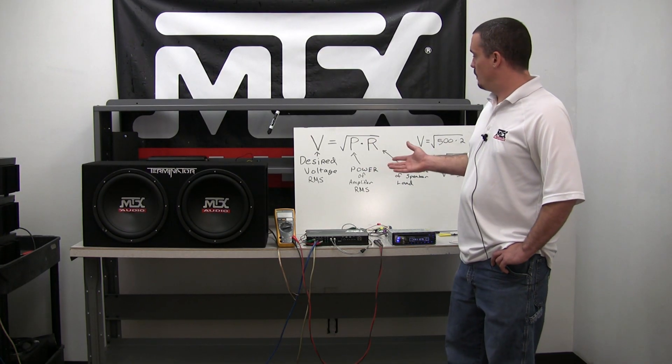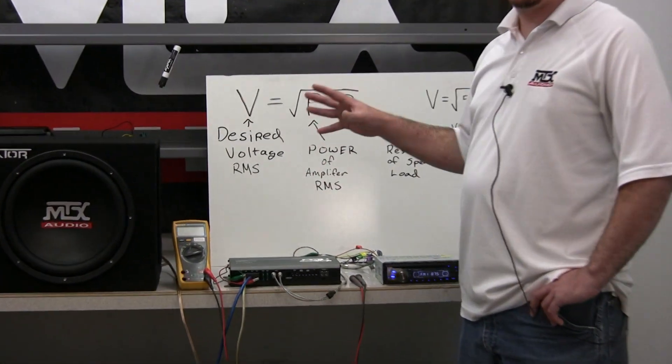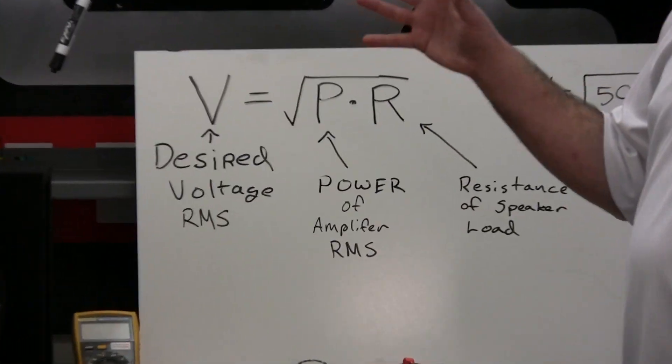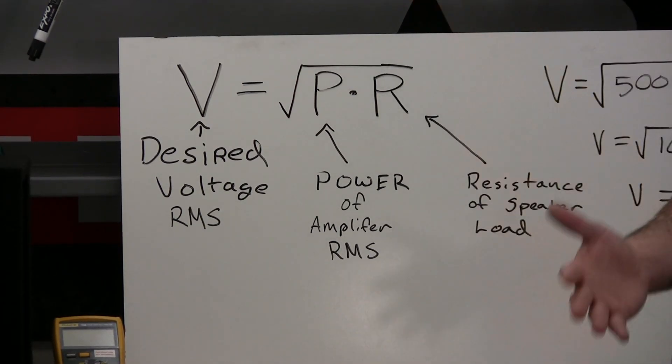So what we're going to do is we're looking for a desired RMS voltage output of the amplifier. That's going to give us our fixed level so that we know that's the maximum amount of output voltage we're going to see, the maximum amount of power that we're going to see.